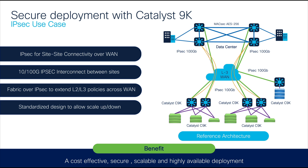These switches leverage IPsec capabilities to establish secure connections to the data center, achieving site-to-site secure connectivity at speeds of up to 100 Gbps through IPsec. Moreover, the implementation goes beyond simple connectivity — the IPsec tunnels serve as a foundation for extending fabric, allowing flexibility to extend Layer 2 and Layer 3 policies, further enhancing the versatility of the solution. This standardized design offers scalability, allowing the organization to adjust bandwidth from 10 Gbps to 100 Gbps for secure connectivity across the WAN. By consolidating these functions into a Catalyst 9K switch, the organization benefits from a cost-effective solution.